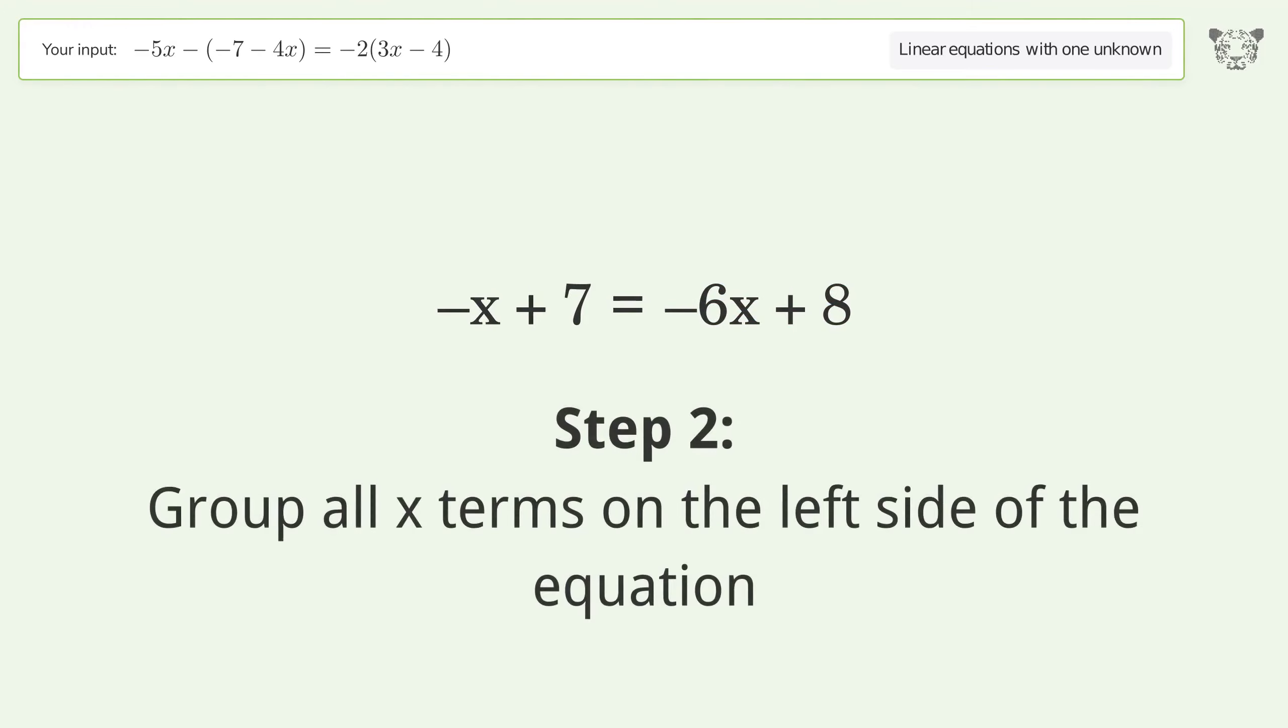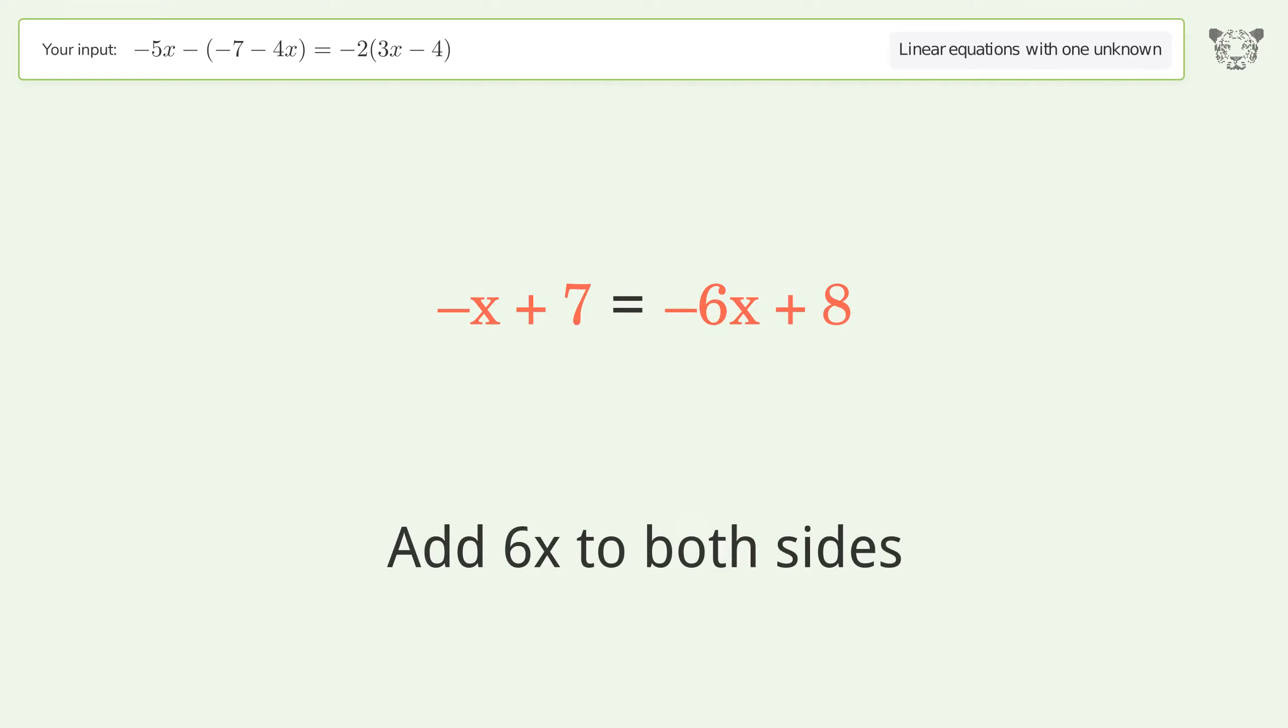Group all x terms on the left side of the equation. Add 6x to both sides, group like terms, and simplify the arithmetic.